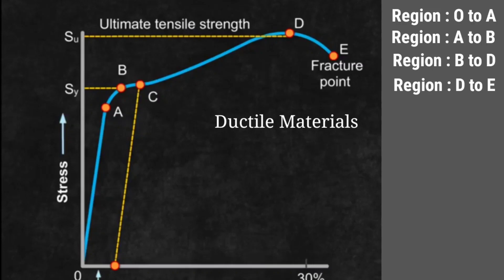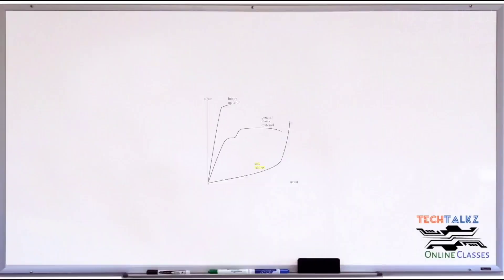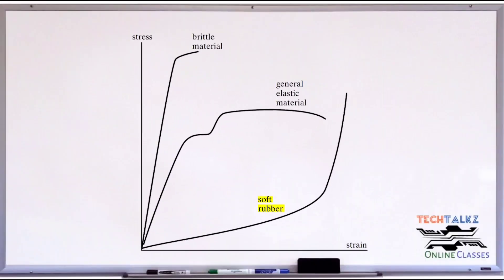This stress-strain relationship of the curves varies from material to material. Check the figure. This is the stress-strain relationship of soft rubber. This is the curve of brittle materials. For brittle materials, fracture occurs very early. Silicon is a brittle material.